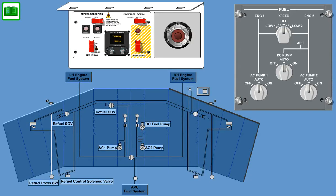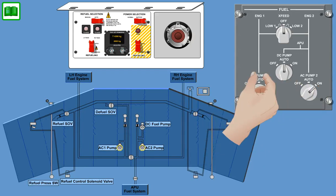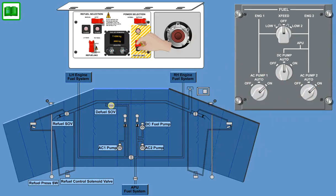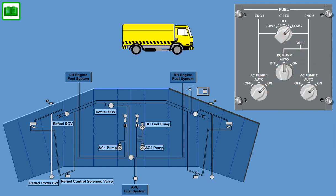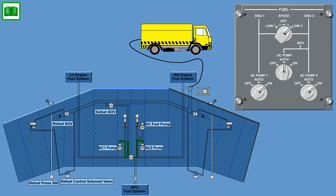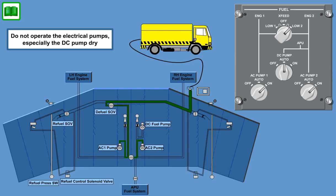To perform pressure defueling, the electric pumps have to be selected on and the defuel shutoff valve has to be opened to provide pressurized fuel at the adapter. To defuel both tanks, the cross-feed valve also has to be opened. Suction by ground equipment can be applied to assist in the defuel process. Note: do not operate the electrical pumps, especially the DC pump, dry.